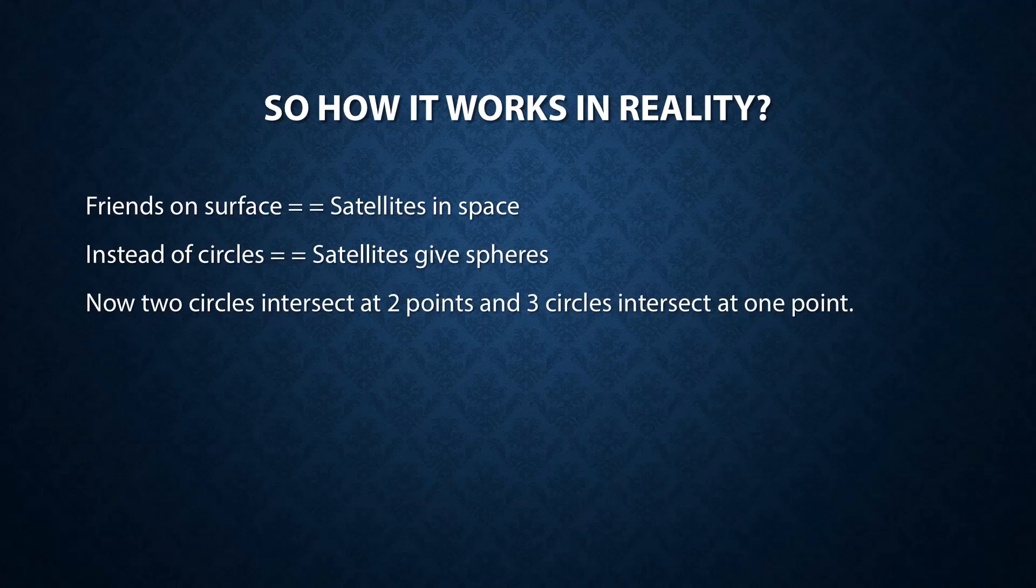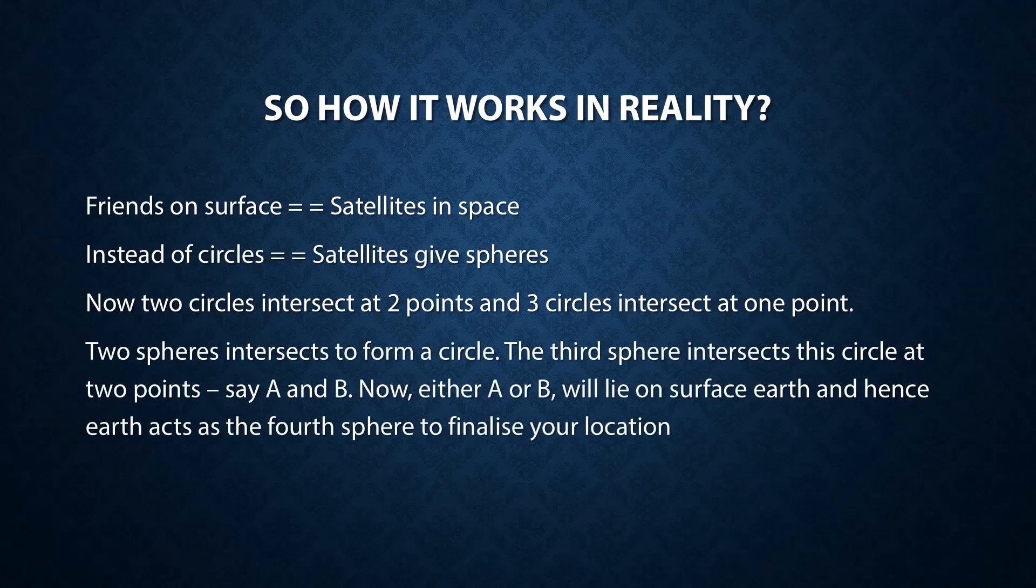Now, on a plane paper, two circles will intersect at two points and three circles intersect at one point to give you the exact location. But in case of spheres, two spheres intersect to form a circle. The third sphere will intersect this circle at two points, say A and B. Now either A or B will lie on the surface of the earth, and hence the earth acts as a fourth sphere to finalize your location.